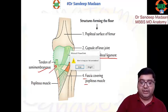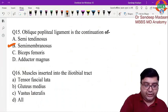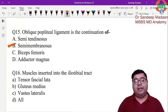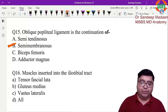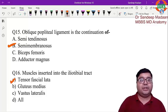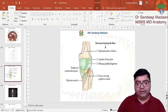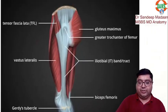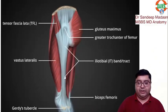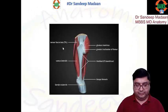Next question: muscles inserted into the iliotibial tract. There are actually two — tensor fasciae latae and gluteus maximus. The iliotibial tract receives both gluteus maximus and tensor fasciae latae. Thank you so much and God bless you all — all the very best.